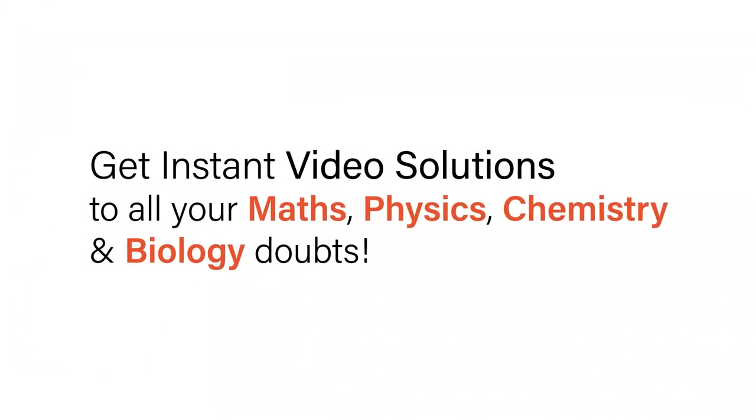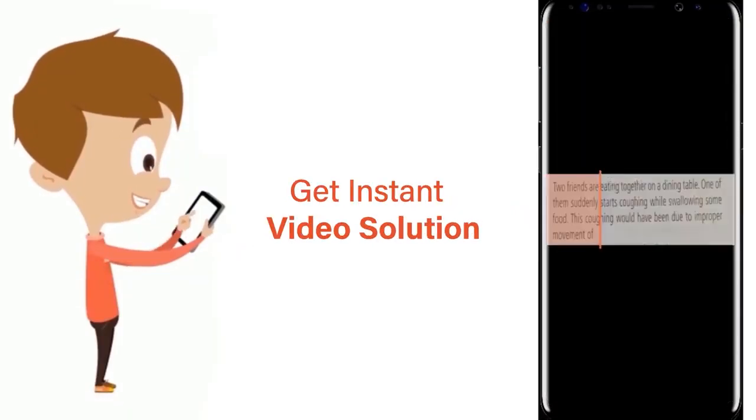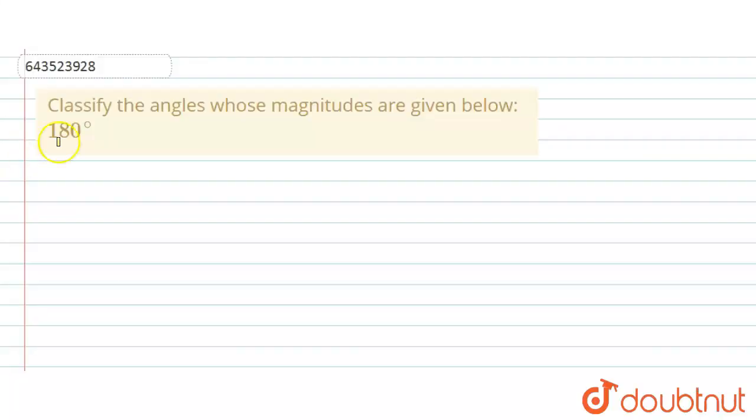With Doubtnet, get instant video solutions to all your maths, physics, chemistry and biology doubts. Just click the image of the question, crop the question and get instant video solution. Download Doubtnet app today. Hello everyone, the question says that classify the angles whose magnitude are given below.